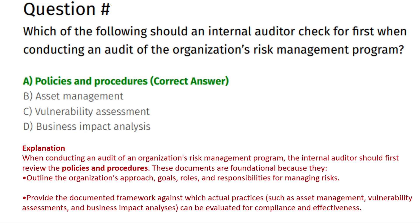Which of the following should an internal auditor check for first when conducting an audit of the organization's risk management program? Option A: Policies and Procedures. Option B: Asset Management. Option C: Vulnerability Assessment. Option D: Business Impact Analysis.